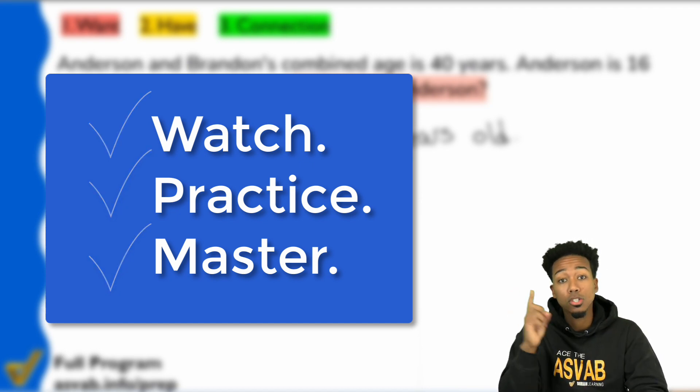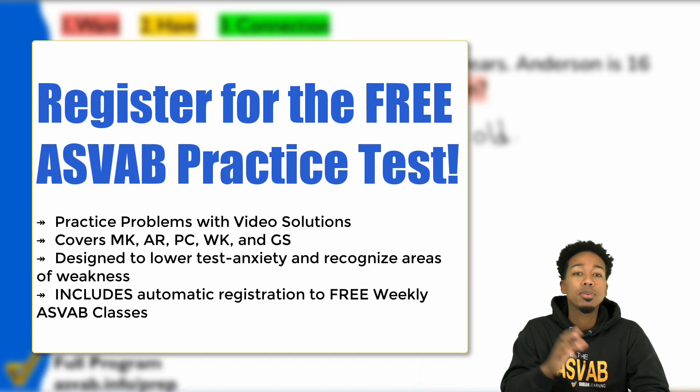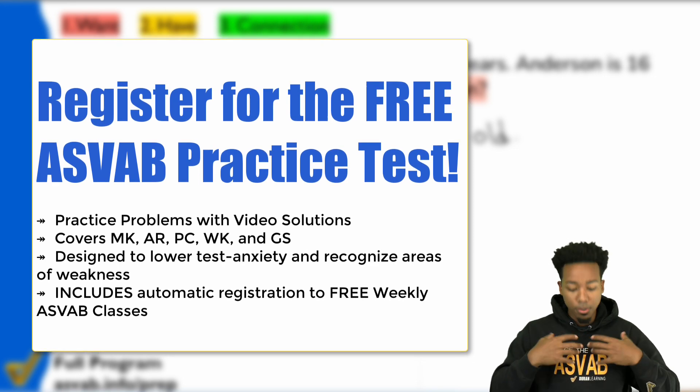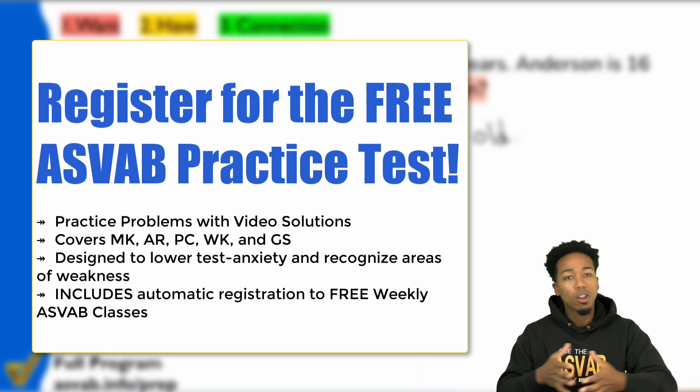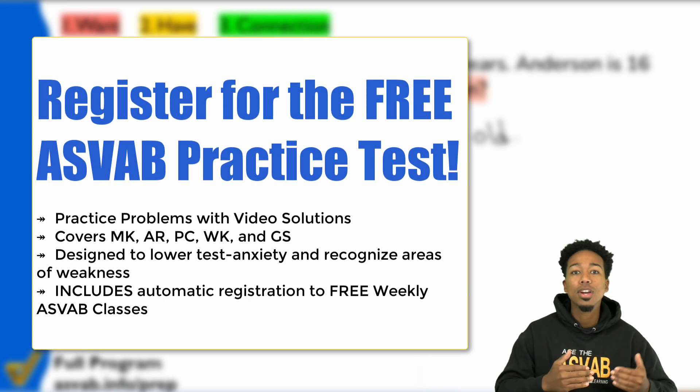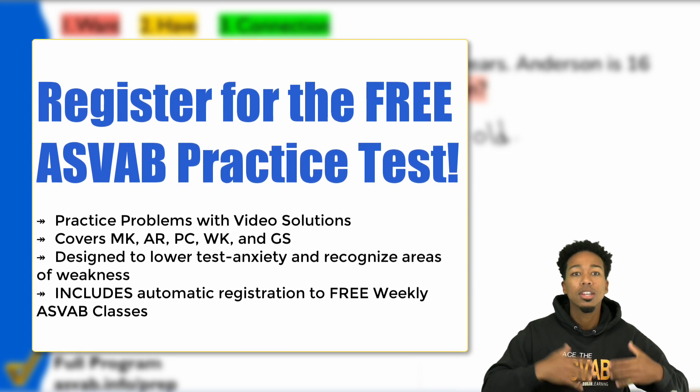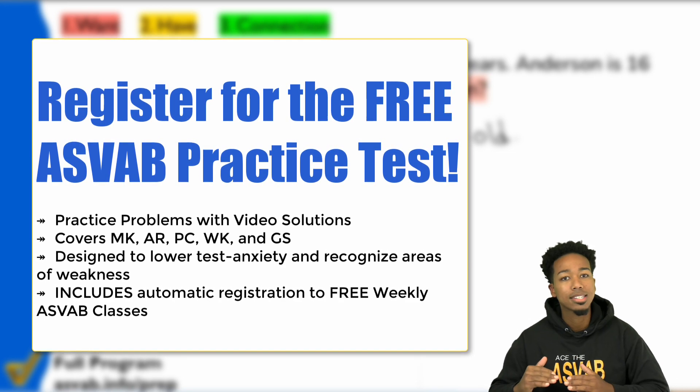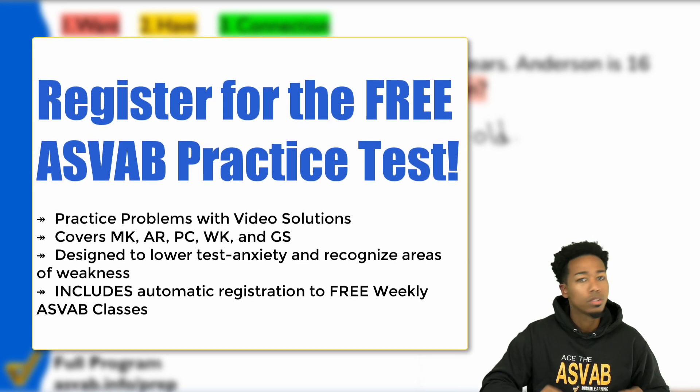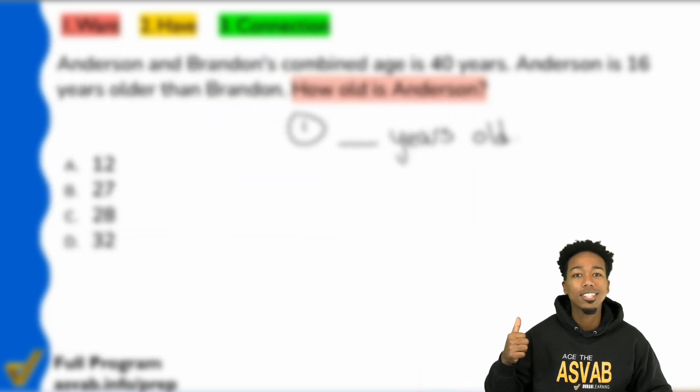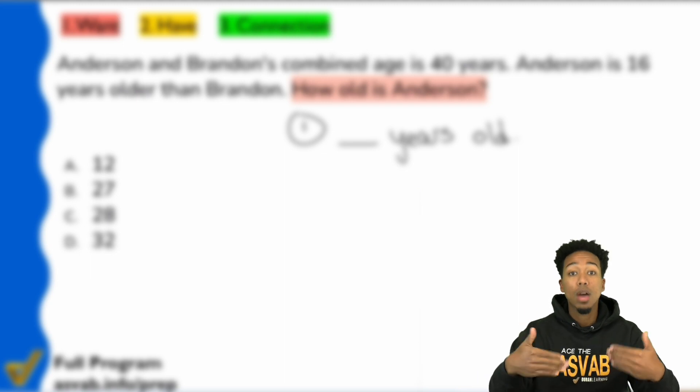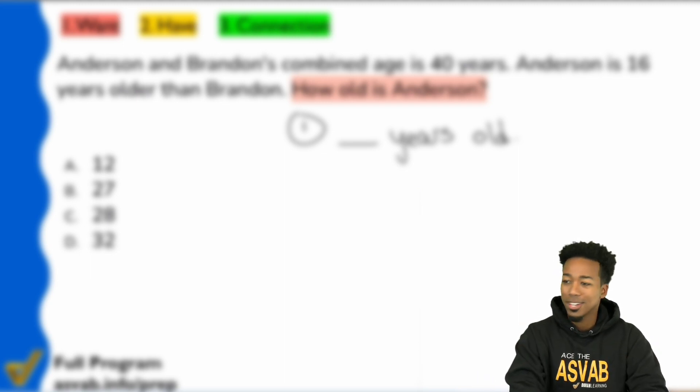And the best way to do that is to start off with my free practice test because it comes with video solutions so you can try it out yourself, see all the mistakes that you've made, and then keep raising your score with those video solutions, organizing yourself so you can lower that test anxiety and raise your score. No excuses. It's completely free. So go ahead and click the link there or in the description. That way you can get started, raise your score, and do everything you need to do. Let's ace the ASVAB. But let's get back to the problem after you're done signing up.